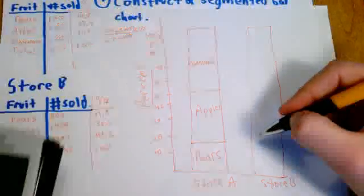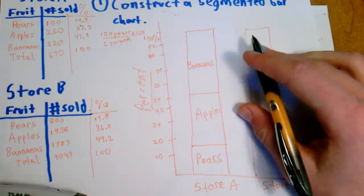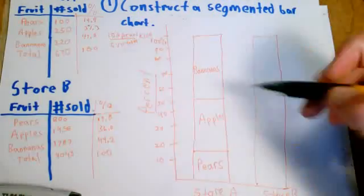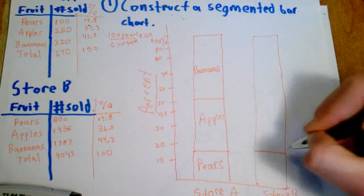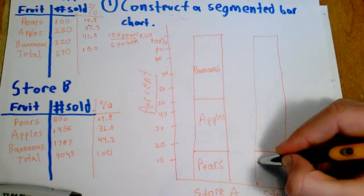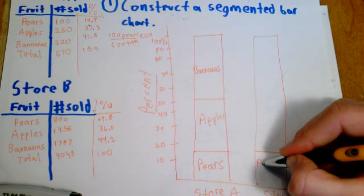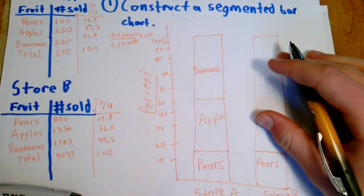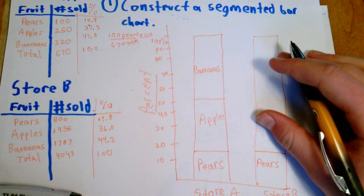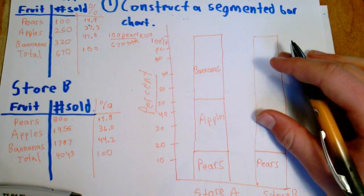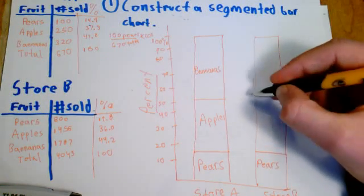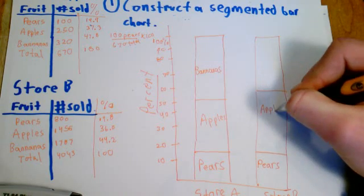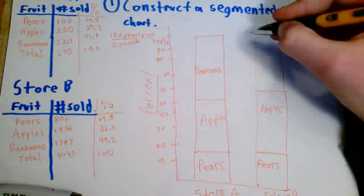All right, the next chart. So the next chart, start with the percent for pears, which is 19.8%, just below 20, and write pears. Then add 19.8% plus 36 to get 55.8%, which is like up here, and that is all apples. And then the rest is all bananas.